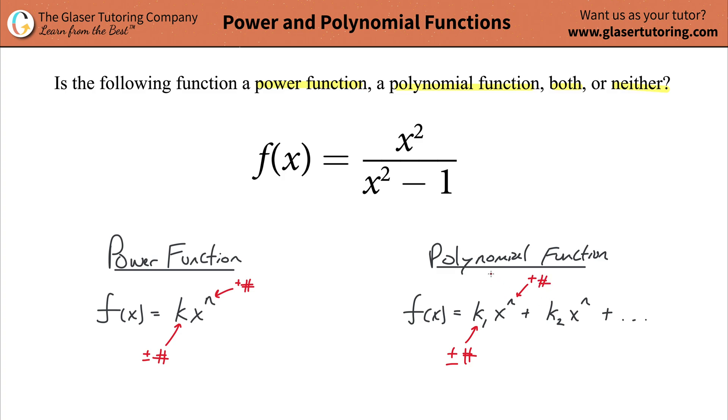So what we need to do is we need to figure out now whether this thing can be manipulated in any possible way so that it can match either this form or somehow match this form. So when you first look at it, obviously it doesn't, right?